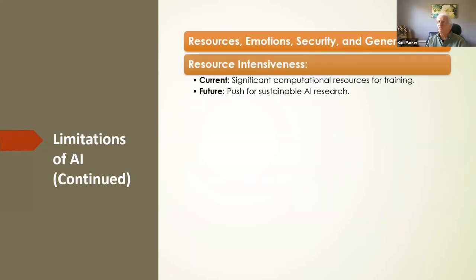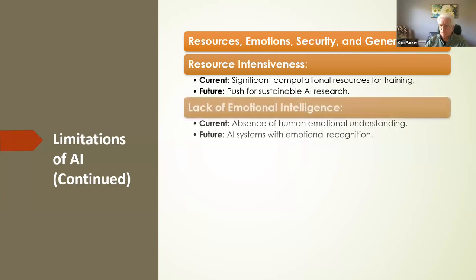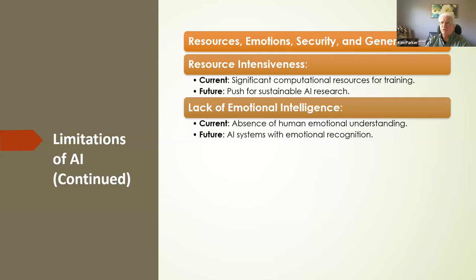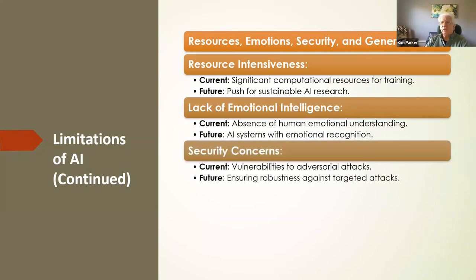We have significant computational resources for training today, but we need sustainable AI research — the research is there, just not enough. There's no emotion in AI — it's like Data and Spock from Star Trek. Oftentimes they'd say 'we're all going to die,' and Captain Kirk would say 'yeah, we're going to do it anyway.' We need AI with emotional recognition, which is still uncertain. Security concerns are also real — what if we give AI to hackers and robbers? We've now got smart criminals.